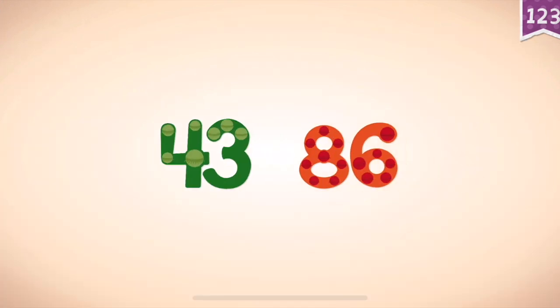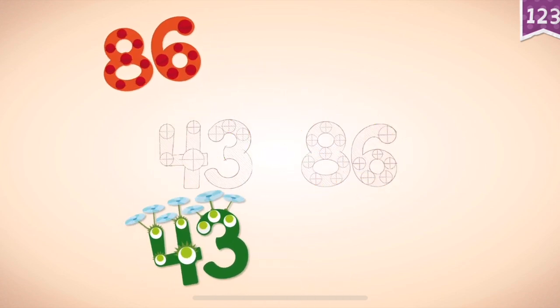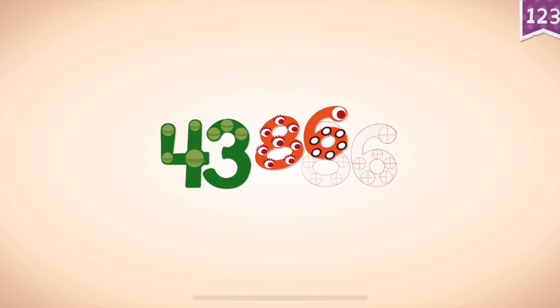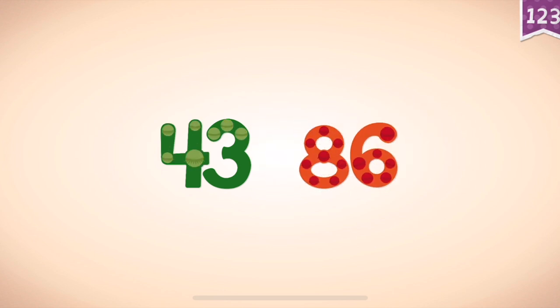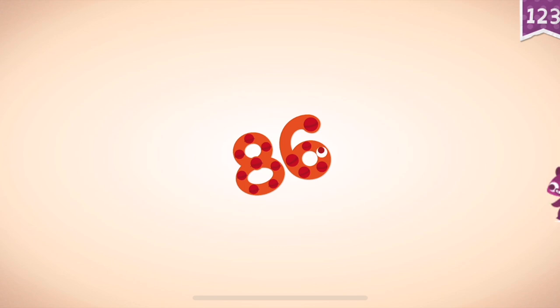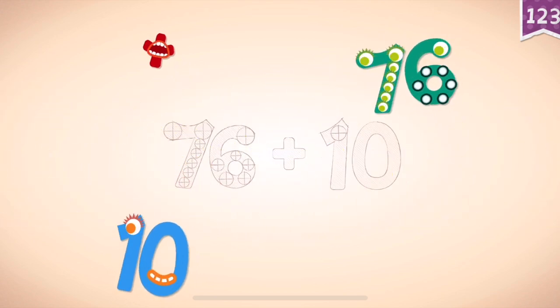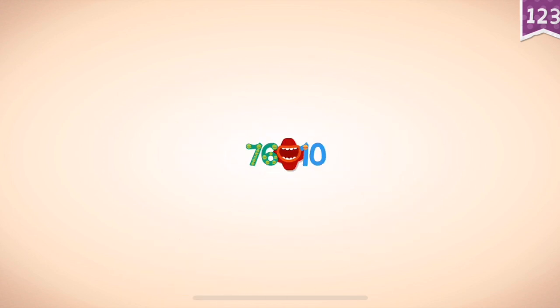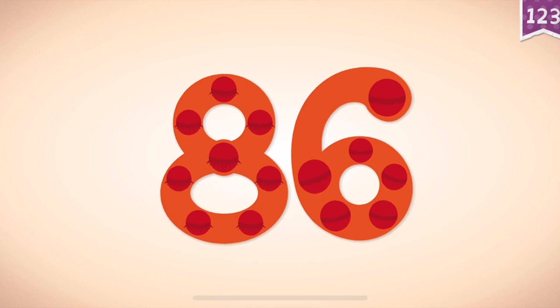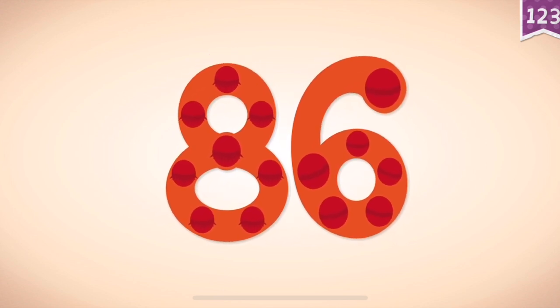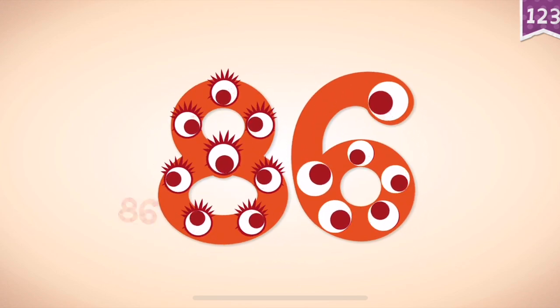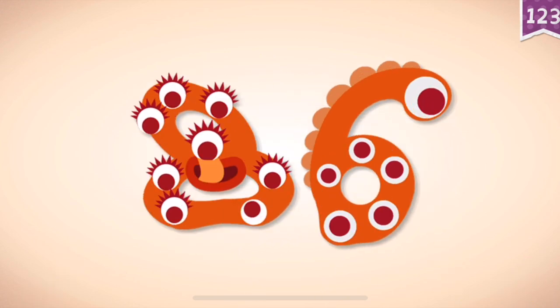Count by 43s: 43, 86. 76 plus 10. 76 plus 10 equals 86. Touch the monster: 2, 6, 10, 46, 76, 86.